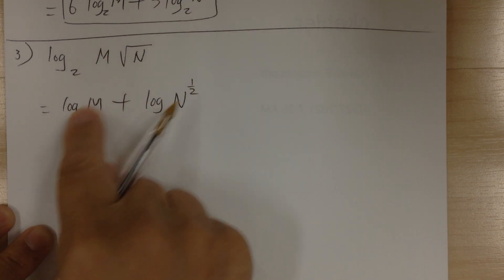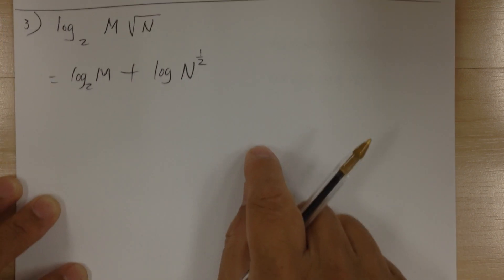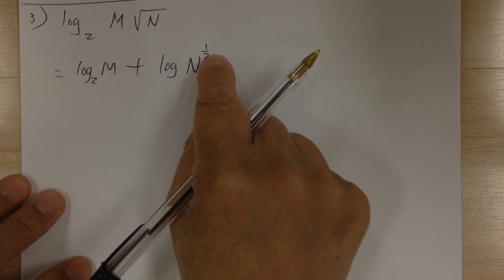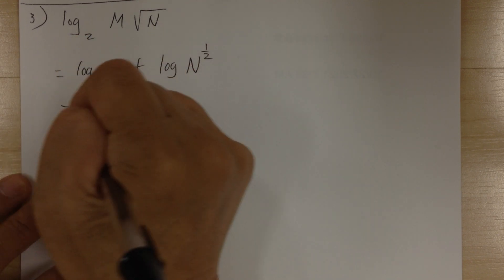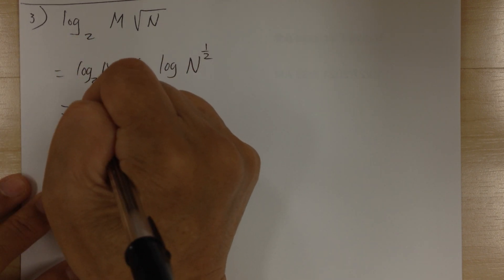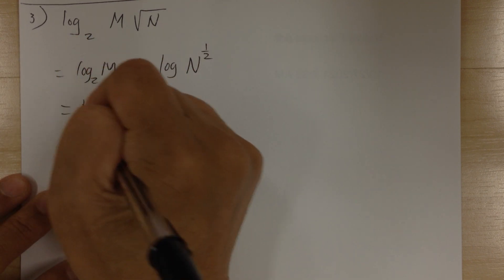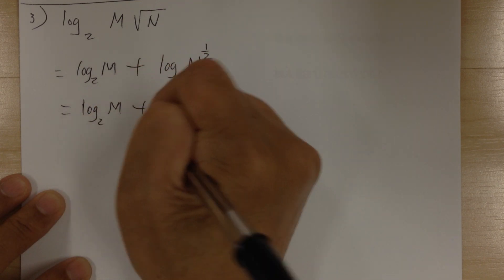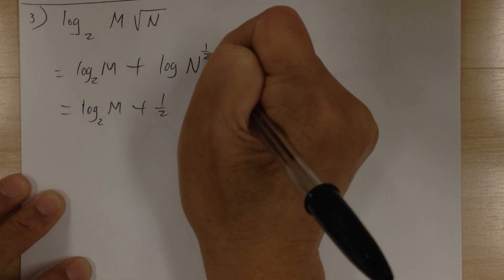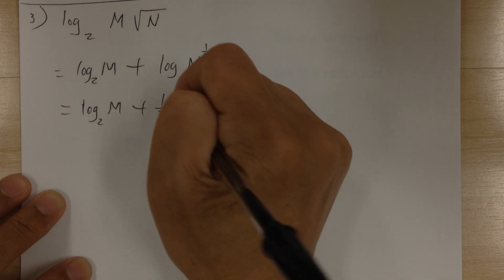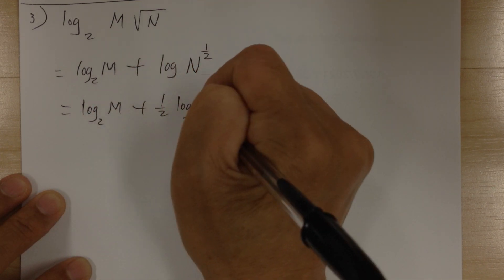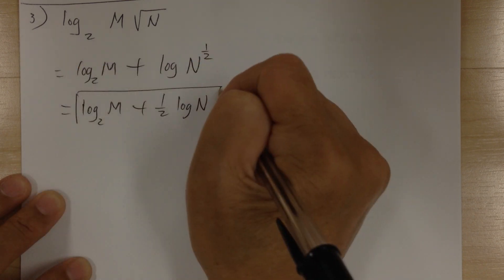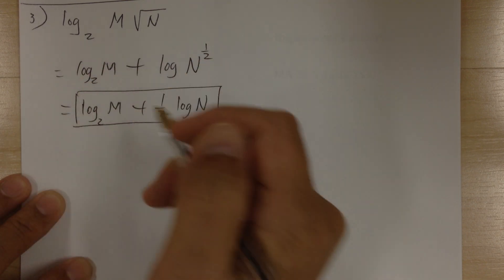So this is this, this is this. Then after that I'm going to apply the third log to bring this to the front. So the exponent comes to the front — that's your third log. And that's it for number 3.